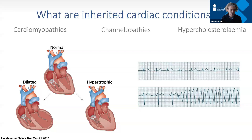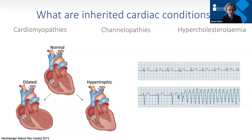The second group are the so-called channelopathies, where the heart looks normal on imaging but there's a problem with the electrical system. These are normally diagnosed using ECGs — electrical tracings of the heart — and I've put an example here showing a normal heart rhythm that suddenly goes haywire with an abnormal rhythm. The third group are single gene faults that lead to very high cholesterol levels, which in turn leads to furring up of the coronary arteries and a high risk of heart attacks.